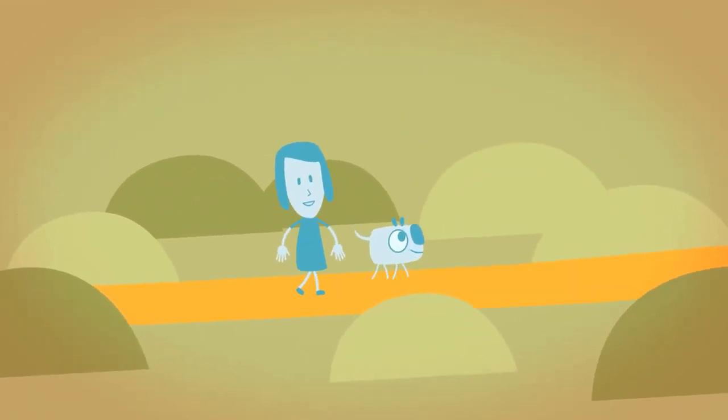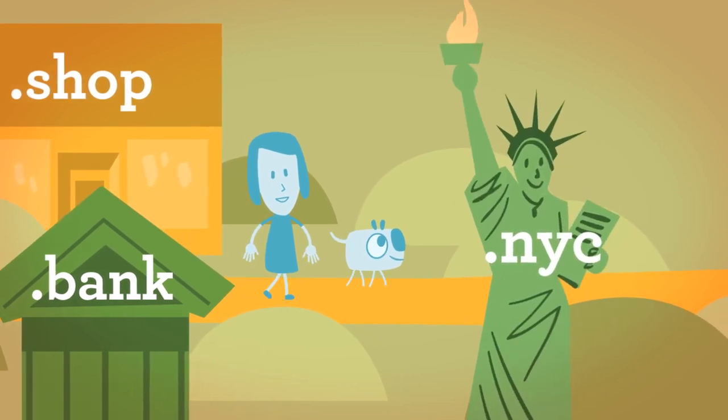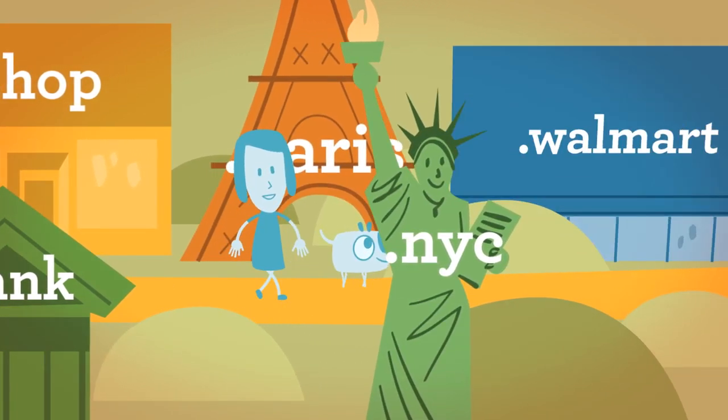Some are generic, such as .shop or .bank. Others geographic, such as .nyc or .paris. And others are brands, such as .walmart.